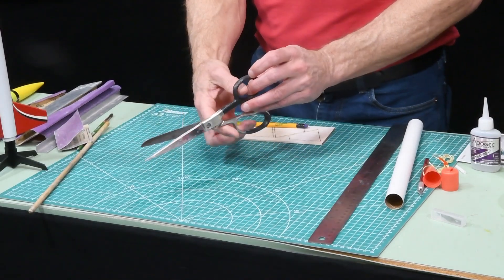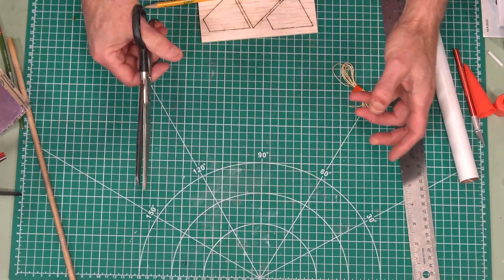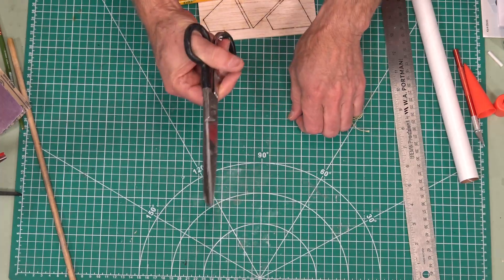Another tool you're going to need is the scissors because again cutting things like shock cord or the parachutes out of the rocket you'll be using scissors.